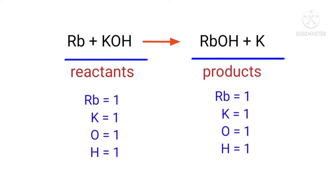If you look at this equation, the number of atoms on the reactants side is the same as the number of atoms on the products side. There is one rubidium atom, one potassium atom, one oxygen atom, and one hydrogen atom on both sides.